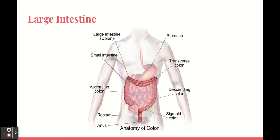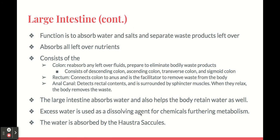The large intestine, also known as the colon, consists of the ascending colon, the transverse colon, the descending colon, and the sigmoid colon. The function of the large intestine is to absorb water and salts and to separate waste products left over. It also absorbs all leftover nutrients.